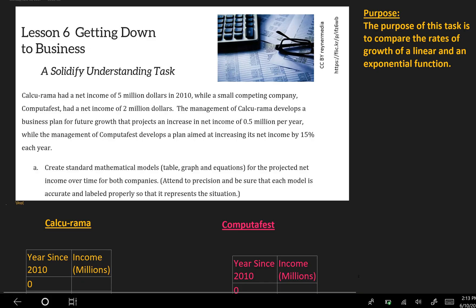So we have two businesses here that are described in this paragraph. We have Calcurama, which had a net income of $5 million in 2010, and then a competing company, Computafest, that had a net income of $2 million. The management of Calcurama develops a business plan for future growth that projects a net income of $0.5 million per year, while Computafest develops a plan aimed at increasing its income by 15%.